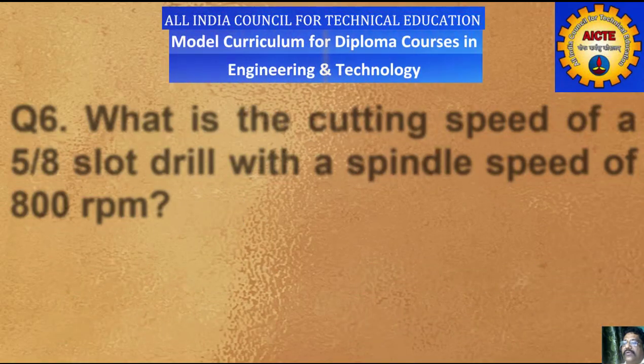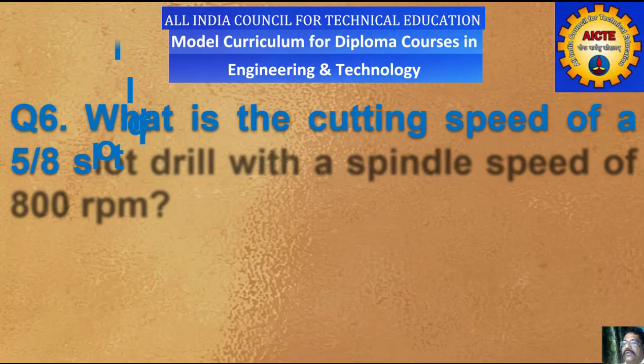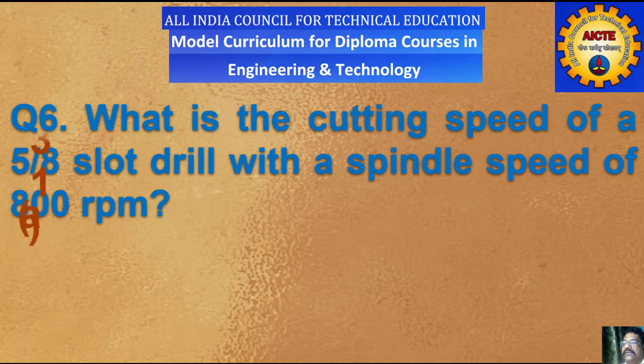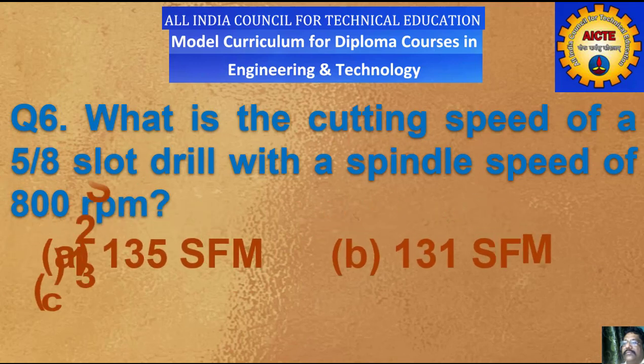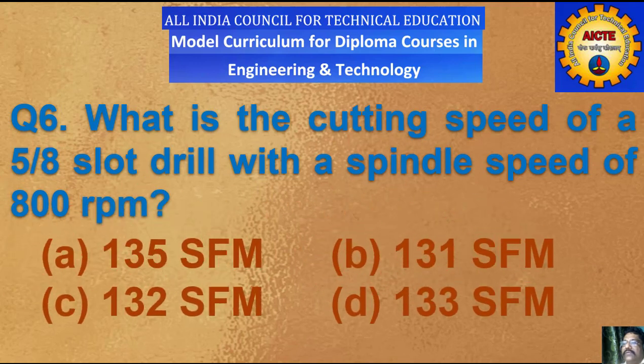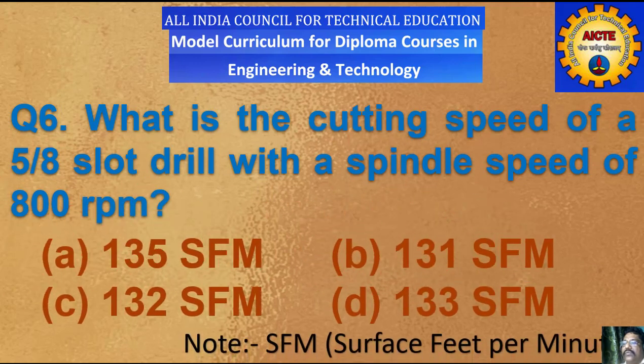Question number 6: what is the cutting speed of a 5/8 inch slot drill with a spindle speed of 800 rpm? A) 135 SFM, B) 131 SFM, C) 132 SFM, D) 133 SFM.